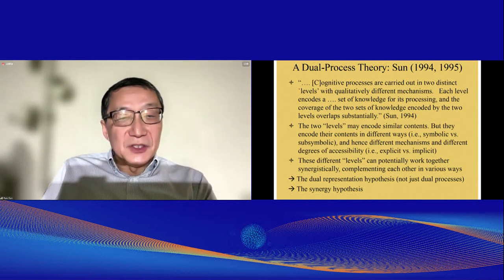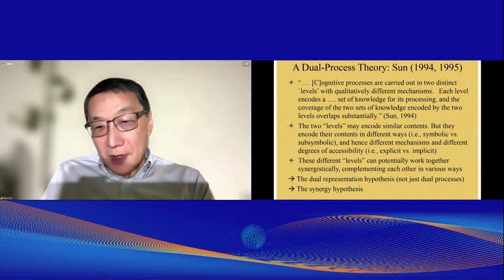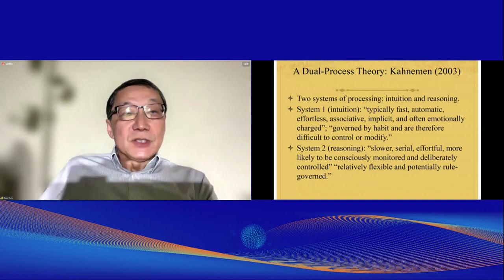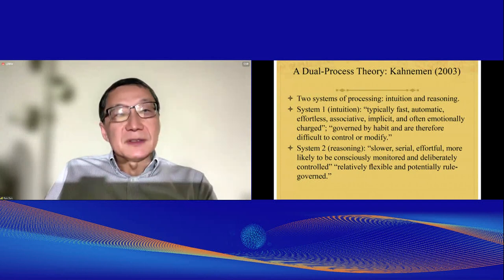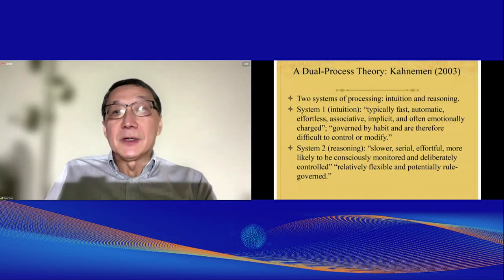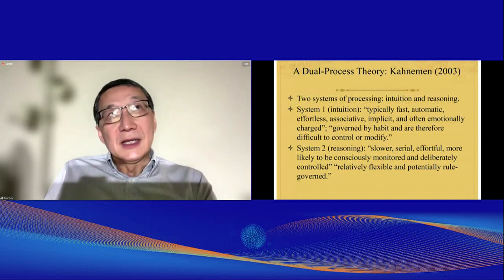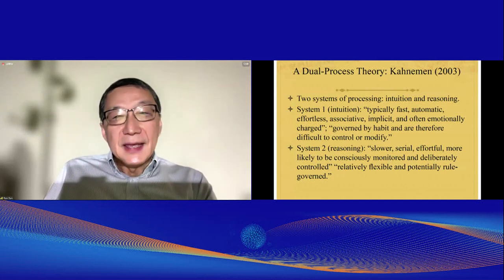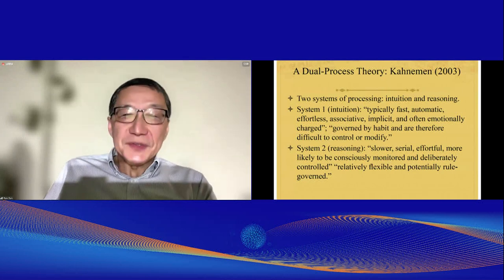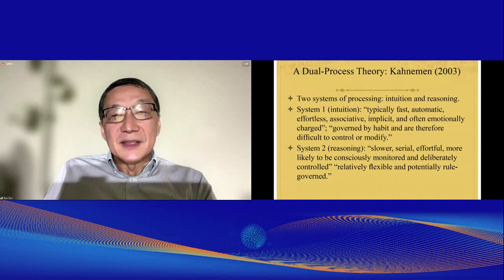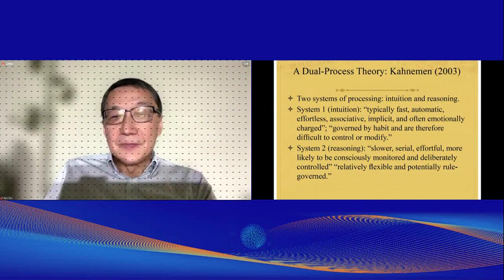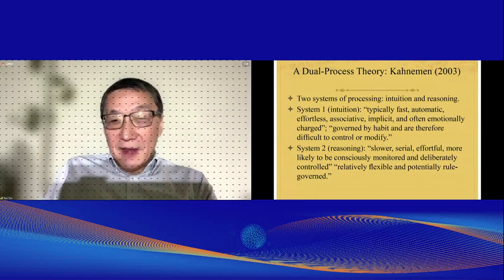I refer to these as the dual representation hypothesis — which goes beyond just dual processes — and the synergy hypothesis. Here is a more recent dual process theory by Kahneman, who popularized the concept with his 2011 book. According to him, there are two systems of processing: System One, or intuition — typically fast, automatic, effortless, associative, and emotionally charged — and System Two, or reasoning — slower, serial, effortful, more likely to be consciously monitored and controlled, relatively flexible, and potentially rule-governed.